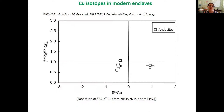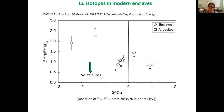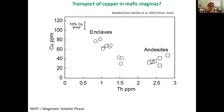Here's the data for this particular example from Sufri Hills volcano. Along the x-axis we have the delta-65 copper isotopes, and on the y-axis we have our lead-210 to radium activity ratios. Looking first at the andesites, you can see that they all lie below the line of one, which shows that they have experienced volatile loss. They also have quite similar copper isotopic compositions of around minus 0.5. In contrast, the enclaves show a lot more variation. The ones with the highest lead-210 ratio also seem to be the most fractionated, with very negative values, and importantly they all sit above the line of one, which means they have experienced volatile accumulation on a very short timescale, probably a few decades.